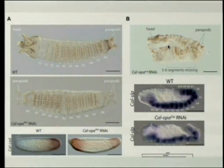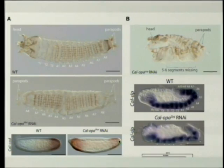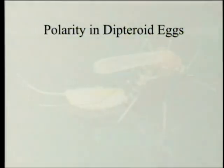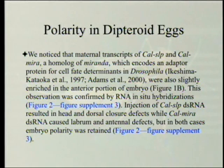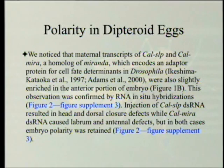There's the shortened one, and a wild type. If you block the RNA you get a tail on both ends. The researchers also noticed that maternal transcripts of CalSLP and CalMira — a homolog of Miranda, which encodes an adapter protein for fate-determining determinants in Drosophila — were also slightly enriched in the anterior portion of the embryo, confirmed by RNA in situ hybridizations.